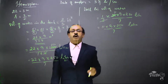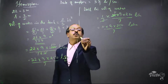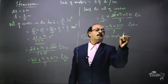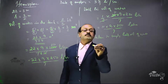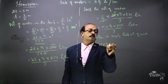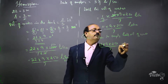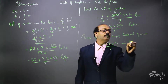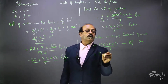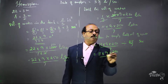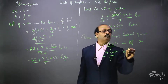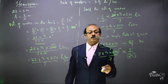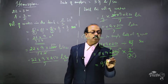Now we can find out the time taken to empty half the volume of water. Time taken equals half volume divided by rate. The rate is 3 and 4 by 7, which equals 25 by 7 liters per second. So time equals 11 into 9 into 250 divided by 7, multiplied by the reciprocal 7 by 25. The 7s cancel and 250 and 25 cancel giving 10, so we get 11 into 9 into 10 equals 990 seconds.